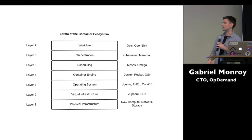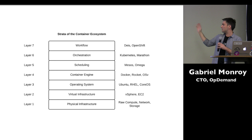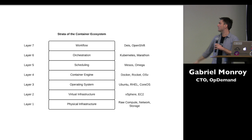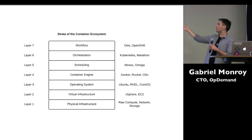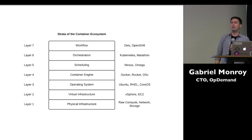I just post it up on Twitter, and this was the diagram. Layer one: physical infrastructure — raw compute, network, and storage. Layer two: virtual infrastructure — vSphere, EC2, that sort of thing — operating systems, container engines. This was actually the week that Rocket came out, so I decided to include it. There's also OSv, which is an interesting technology — more on the unikernel side. For scheduling, you have things like Mesos and Omega. For orchestration systems: Kubernetes, Marathon, Compose — a new one coming from Docker. And then at the workflow layer, you have Deis and also OpenShift, which is actually built atop Kubernetes.